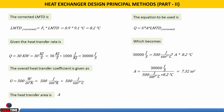The heat transfer rate Q is 30 kW = 30,000 W. The overall heat transfer coefficient U is 500 W/m²·K. Using Q = U × A × LMTD_corrected, we get 30,000 = 500 × A × 8.2. Solving for A, the heat transfer area is 7.32 m².